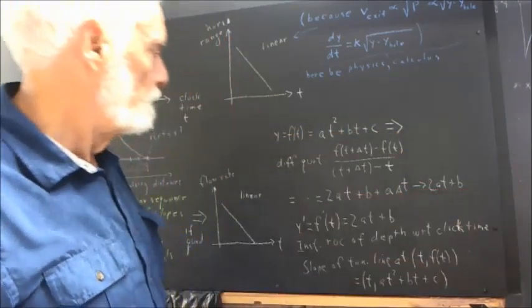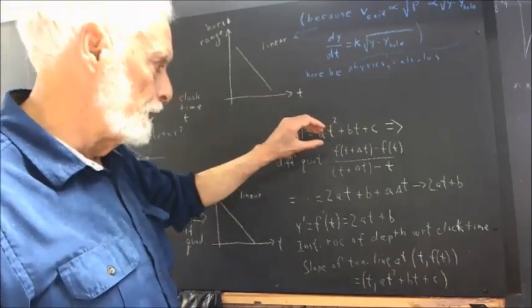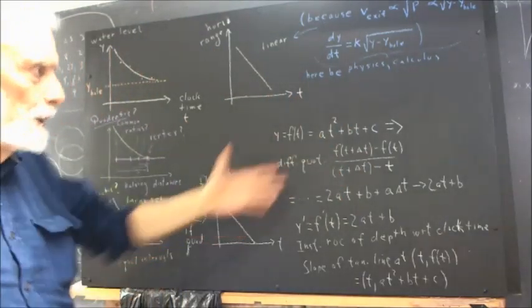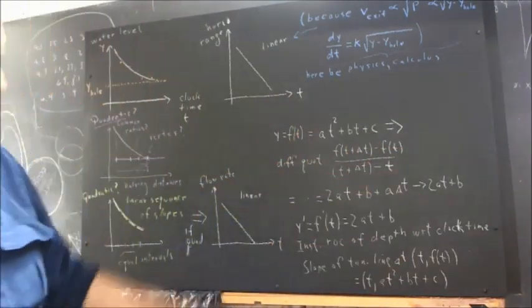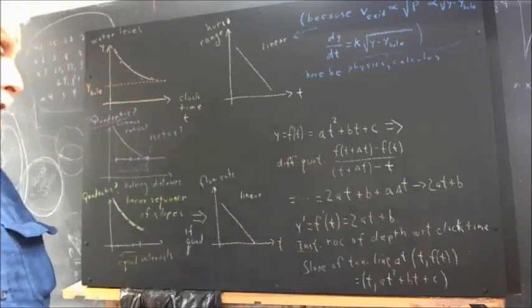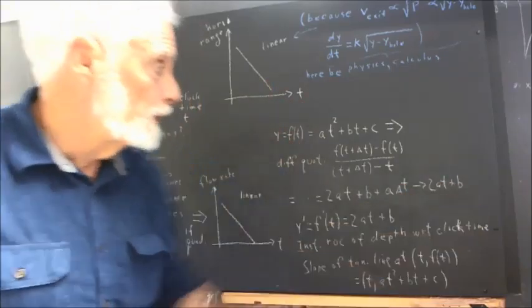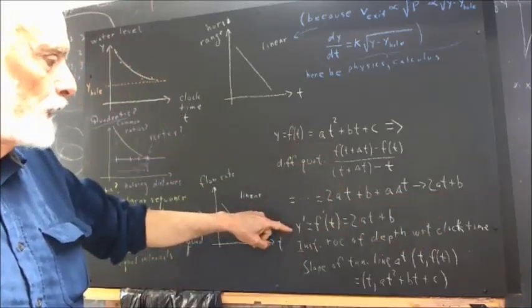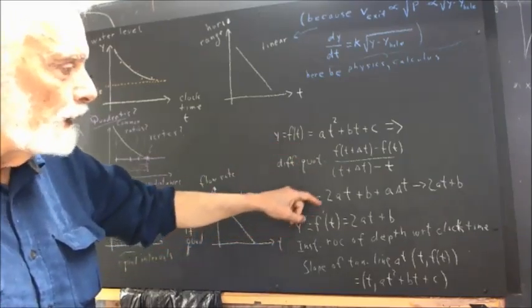Now, as delta t approaches zero, this average rate approaches what we call an instantaneous rate. Now, that's something we need to think about. That's something you talk about in a calculus course, but we want to talk about it a little bit in a pre-calculus course, so it's not a shock when we get to calculus. It makes calculus a lot easier if we talk about that in this course. So, what we get then, the 2at plus b is the instantaneous rate of change of this function. So, we write that instantaneous rate of change of y equals f of t as y prime equals f prime of t.